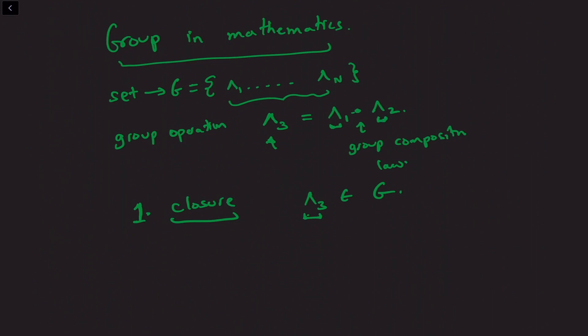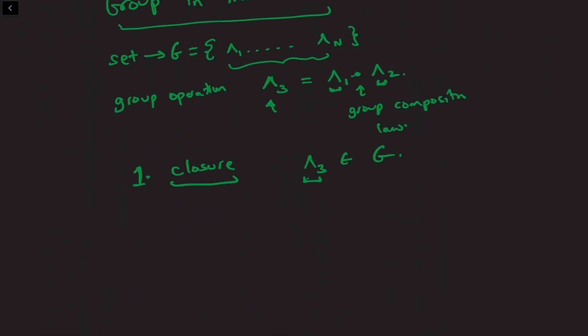If I take a group operation where I take two group elements and compose them, I get a third group element. Note that it's not necessary that lambda 2 composed with lambda 1 gives you back the same element lambda 3 — this is not a necessary criterion. The operation has a particular ordering: lambda 1 acting on lambda 2 need not be the same as lambda 2 acting on lambda 1. The first property is closure; the second property is associativity.